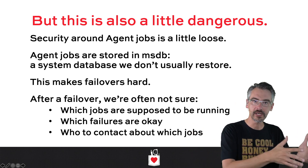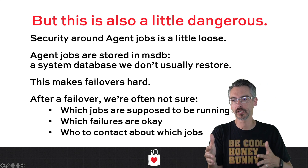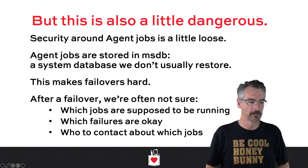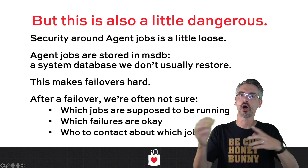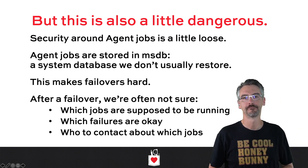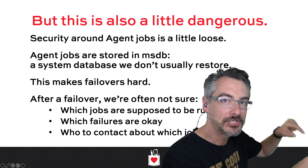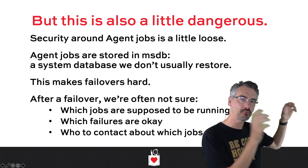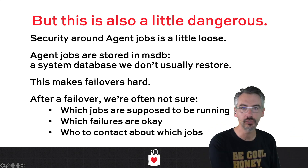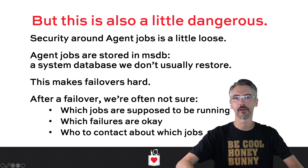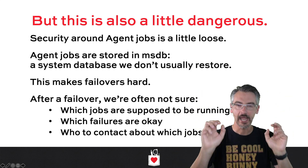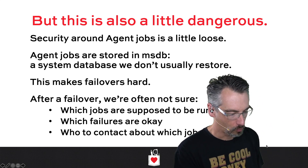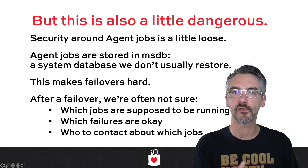So when we need to fail over to disaster recovery, or rebuild a server from scratch, we try to copy all the agent jobs. But when the primary is down and you fire open a big long list of agent jobs and put them all in, you don't know which ones have been failing for years.